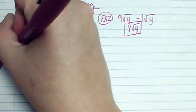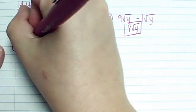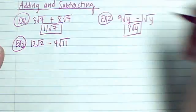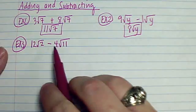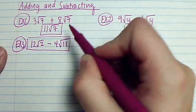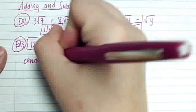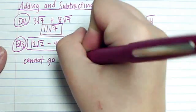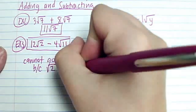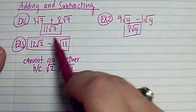Example 3: if I have 12 root 2 minus 4 root 11 — 2 and 11 are not the same, so this right here would be your answer. The reason being is you cannot go further because root 2 does not equal root 11, so those are not equal and I can't combine them.